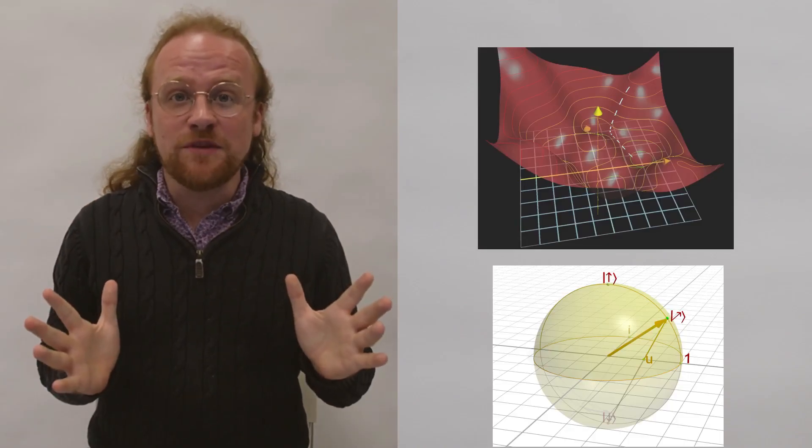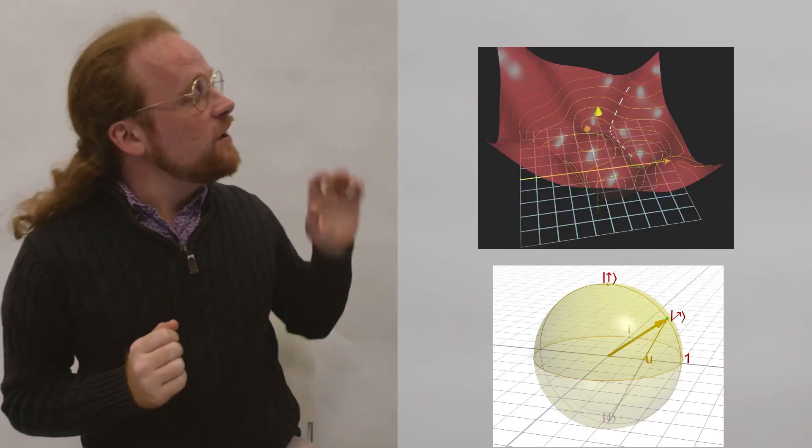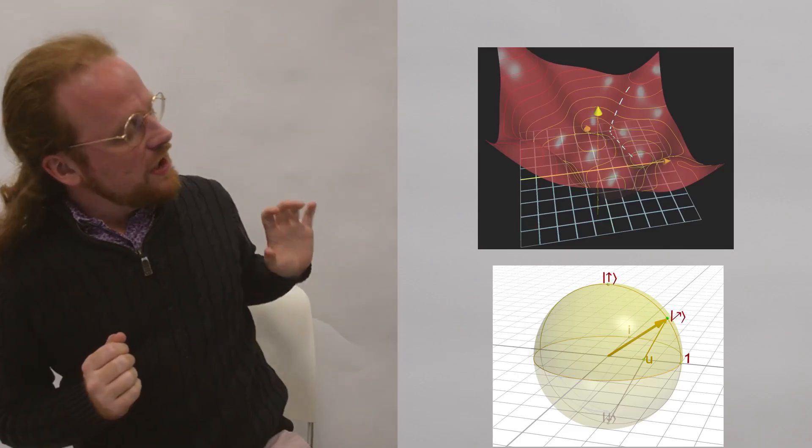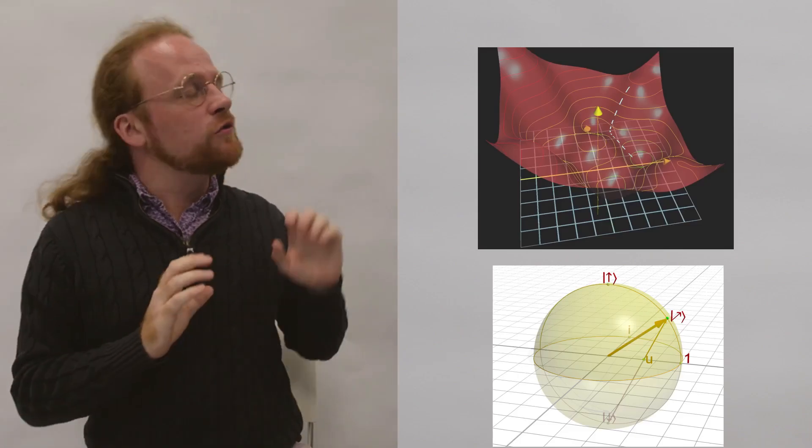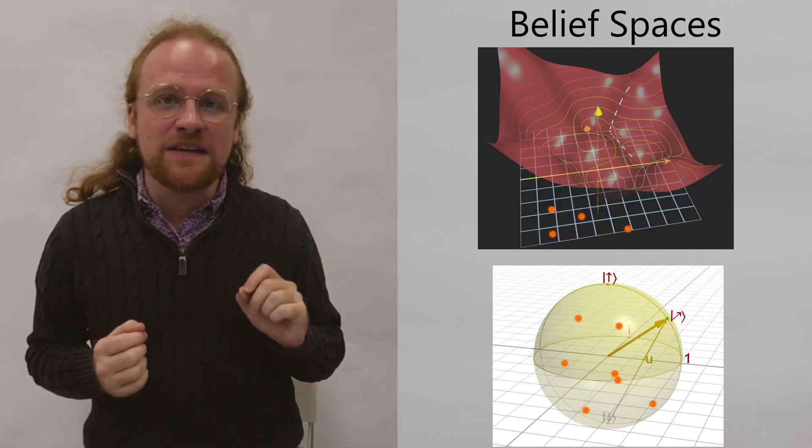These are two of the most important images in all of modern technology: gradient descent from machine learning and the Bloch sphere from quantum computing. They're both examples of things called belief spaces. That means that points in these spaces correspond to beliefs that you could have about some outcome that you're going to observe.